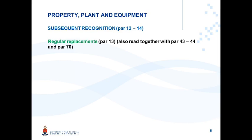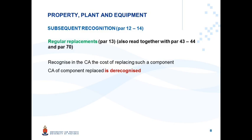Subsequent costs to replace existing components of an existing item of property, plant and equipment: you recognize in the carrying amount of property, plant and equipment the cost of replacing such a component. It already meets the definition of PPE because it has already been capitalized in the original asset. But very importantly, to prevent overstatement of this PPE item, you have to de-recognize the carrying amount of the component that is replaced. So two things need to happen: you recognize the cost of the new component, but you also have to de-recognize the carrying amount of the replaced component.